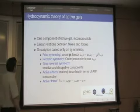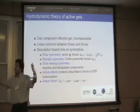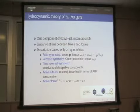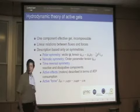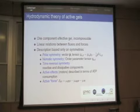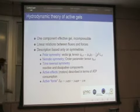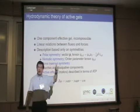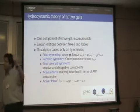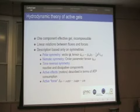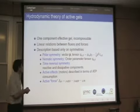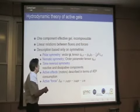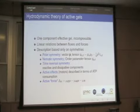The idea is to consider these fluxes and forces and write the most general linear relationships between them, respecting symmetries. Actin is a polar filament, so if locally actin filaments are oriented, you define an average vector — the polarization. There is only one vector in the problem, so any vector in the theory must be proportional to this one. If you need a tensor, there is only one second-order tensor you can make from a vector, which is the quadrupolar tensor Q-alpha-beta. Any tensor in this theory has to be that.